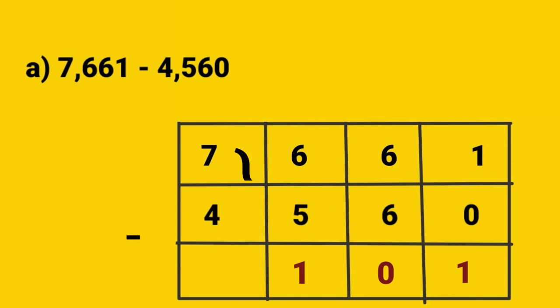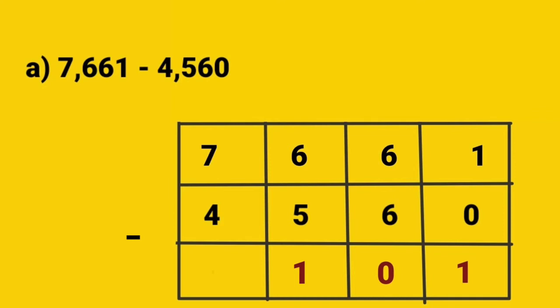And the last one is the 1000's place: 7 minus 4. Now we can subtract 4 from 7, so we get the answer 3. 7,661 minus 4,560 is equal to 3,101.